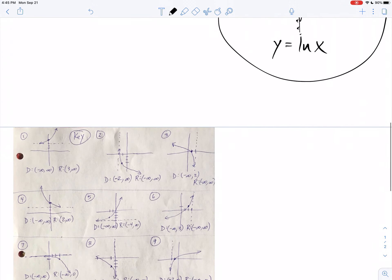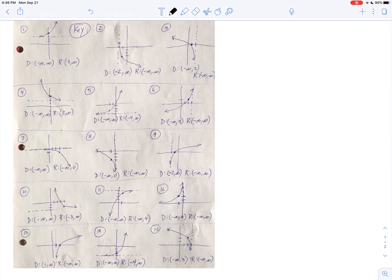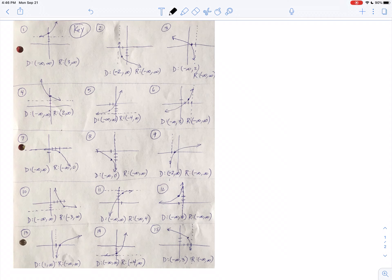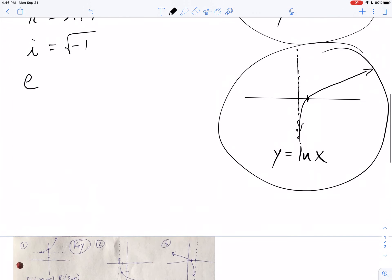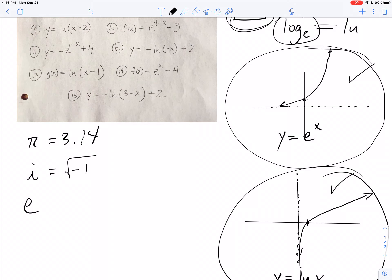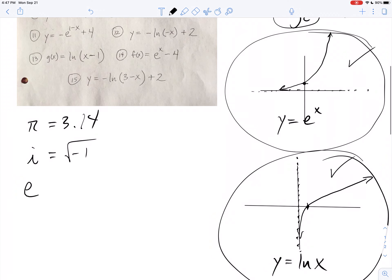Here is your answer key with domains and ranges. I want to make sure you follow my pattern — I have marked the asymptote on every one of these graphs and marked the locator point. For domain and range, we're going to be using interval notation — parentheses with different infinities or numerical values. Remember, these parent functions have asymptotes, and you don't use brackets on an asymptotic function. Everything you do for domain and range will be parentheses.